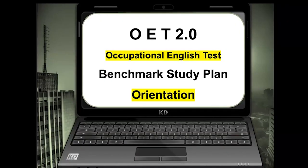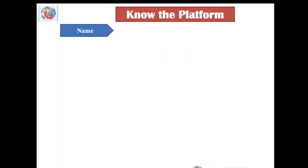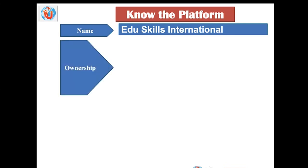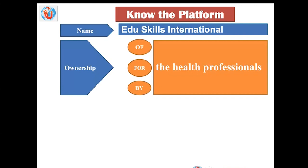This is your platform. We will be explaining briefly the details on how to begin with OET — Occupational English Test — benchmark study plan orientation, and how to know the platform. The basic idea about the platform is especially intended for beginners. The name of the platform is Edu Skills International. It's an umbrella platform for various programs like OET, IELTS, TOFEL, and other courses like MSA, clinical psychology, MA degree, including KG to post-graduation programs. One of the prior programs is OET Edu Skills International.